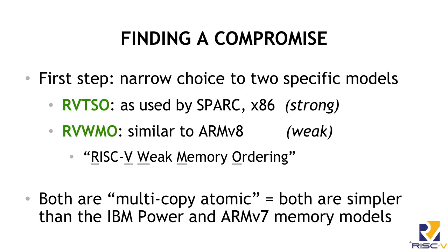The point is important: C, Java, Linux, and these things are all going to work either way — that's been proven in practice on all other architectures. So that wasn't in itself a deciding factor. We just wanted to figure out where along the spectrum we wanted to be. We started to narrow it down to two options: RVTSO — total store ordering familiar from SPARC or x86, specialized for RISC-V — and RVWMO, RISC-V Weak Memory Ordering, roughly similar to ARMv8 if you're familiar with that model.